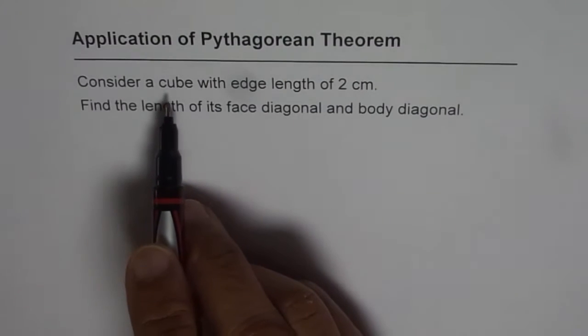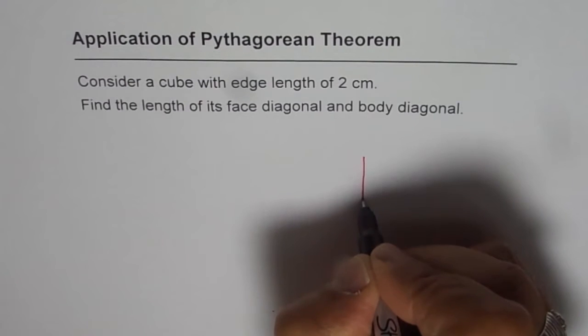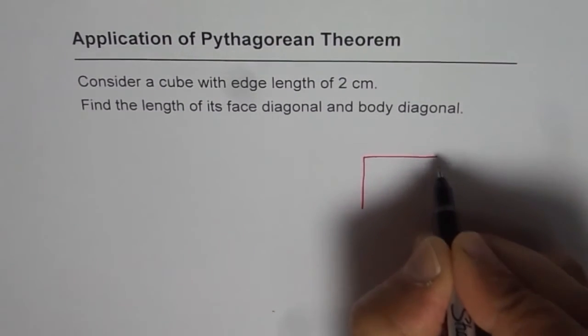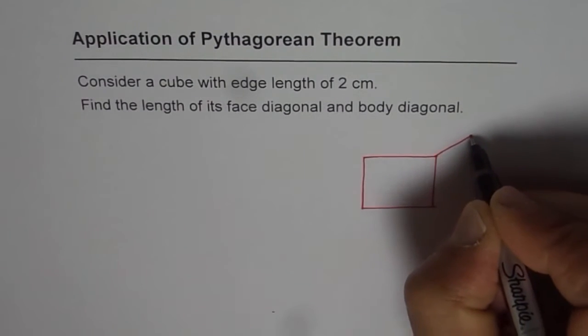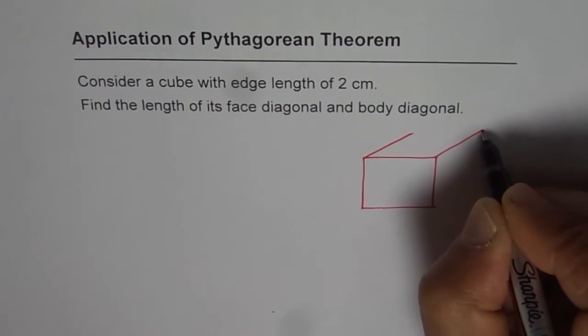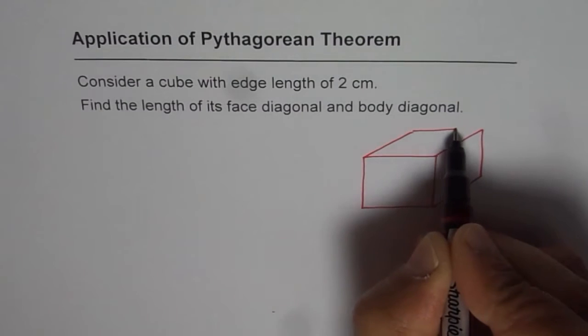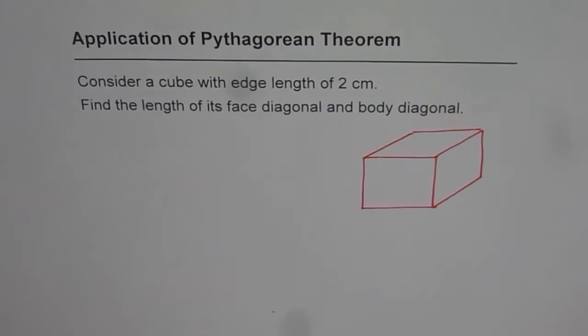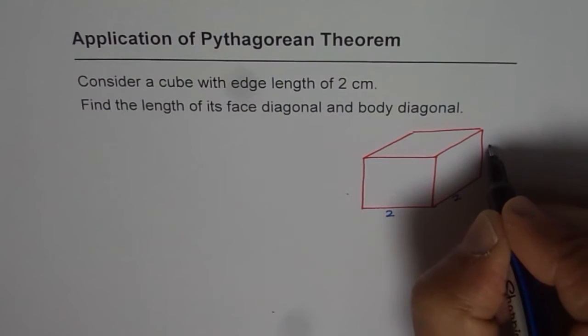Let me draw a cube with edge length of 2 cm. So let us say this is the cube and length of each edge is 2 cm. So this is 2 for you, this is 2, and height is also 2.